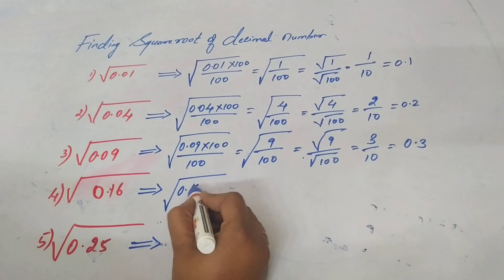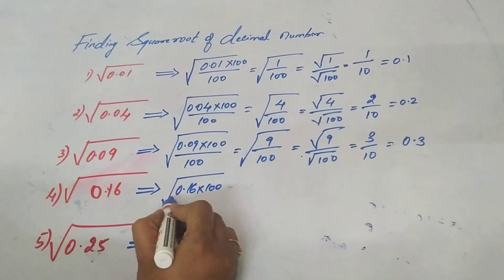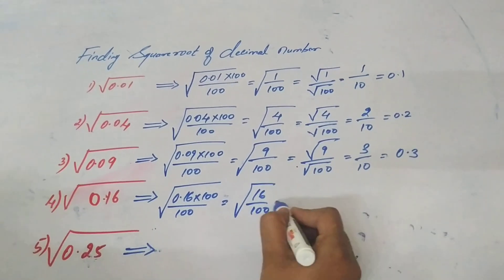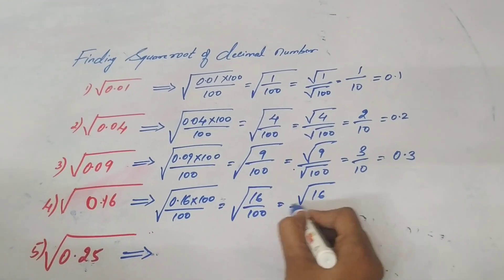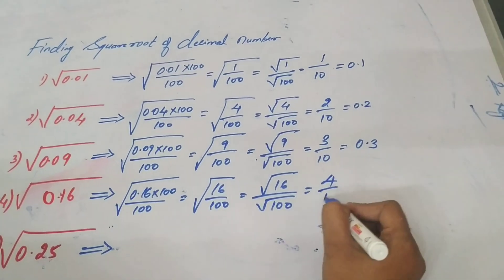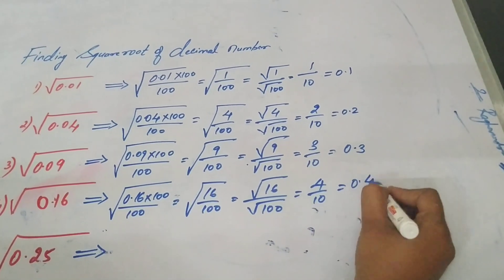0.16 into 100 by 100, root 16 by 100, root 16 by root 100, is equal to 4 by 10, 0.4.